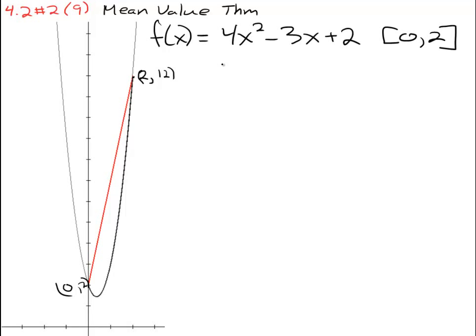It tells us that there must be some number c in this interval from 0 to 2. So there must be 0 less than or equal to c less than or equal to 2. There must be some number c in between 0 and 2 such that f of c equals f of b minus f of a all over b minus a, i.e. it has to equal the slope.